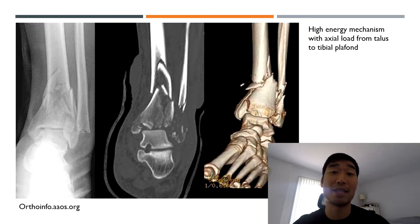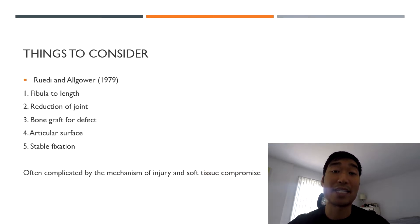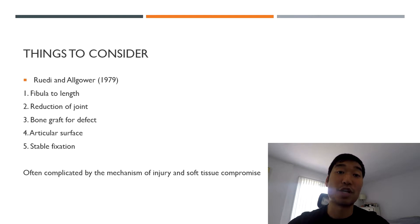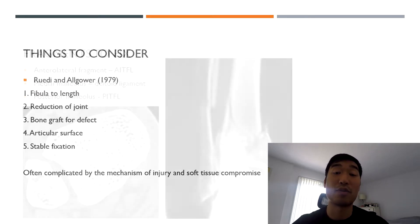The soft tissue and the complicated nature of pylon fractures make this type of trauma a very challenging case to fix. When fixing these, there are basically five principles established by Ruedi-Allgöwer in the 1970s that everyone pretty much follows: one, put the fibula out to length; two, reduction of the joint; three, augment any cortical defect using bone graft; four, make sure the articular surface is intact and aligned; and five, fix everything using a stable fixation technique.